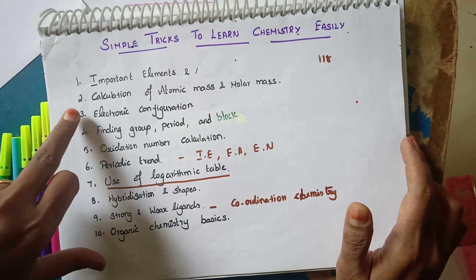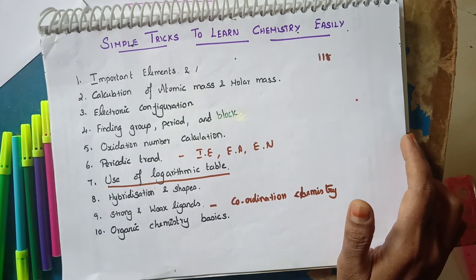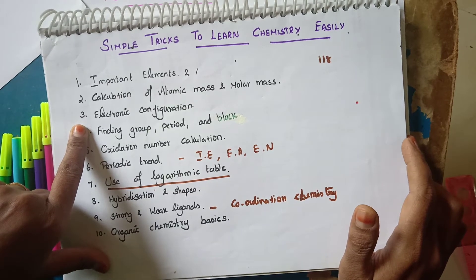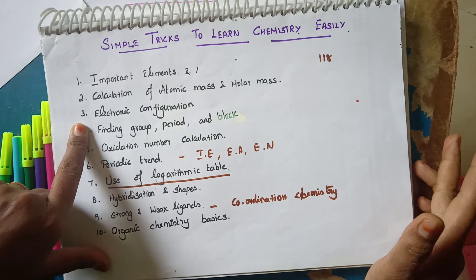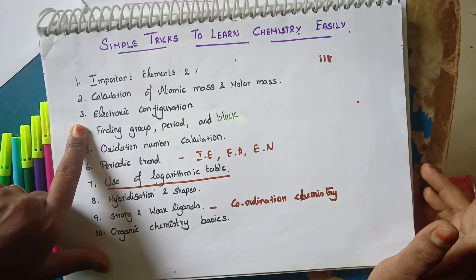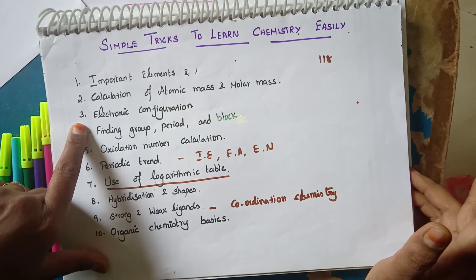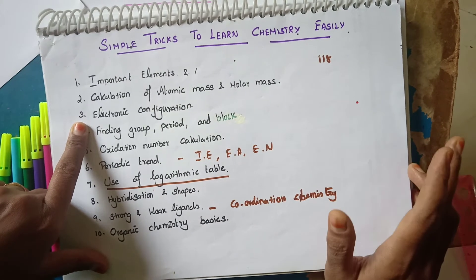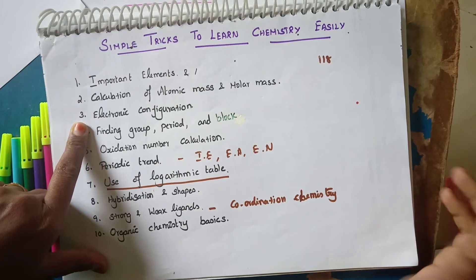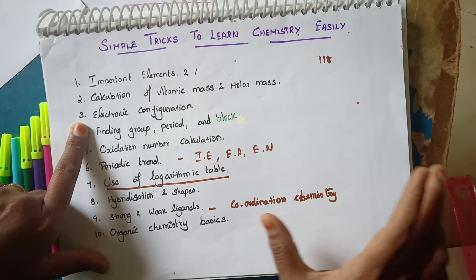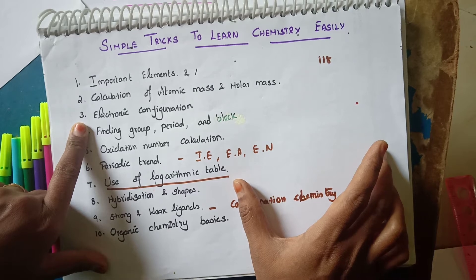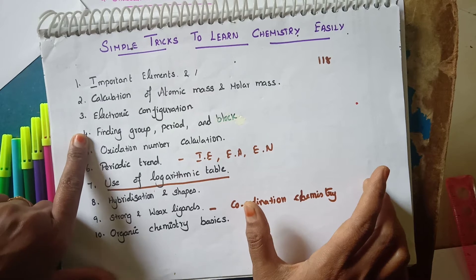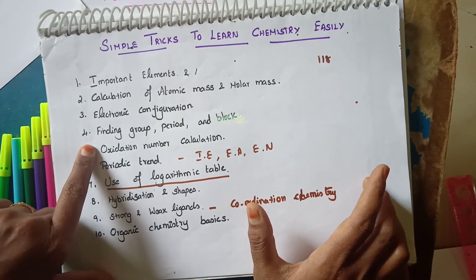The next basic is electronic configuration. It is exactly like an address for your home, or like an identity card. If you do not know the electronic configuration properly, you cannot approach other problems — like which group an element belongs to, which period, which block, or how the electrons are arranged.